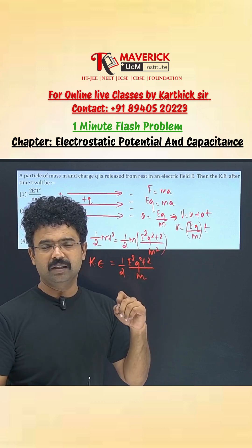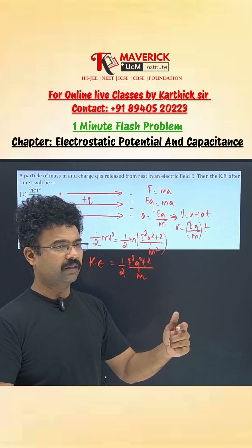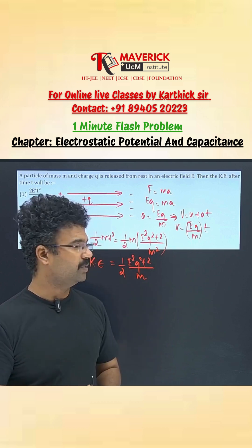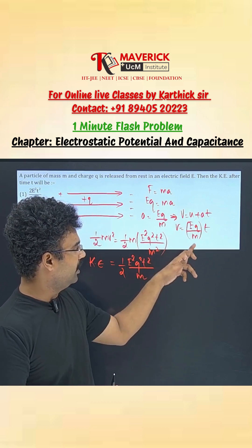Using v is equal to u plus at for the velocity, the initial velocity of the particle is 0. So v is equal to eq by m into t.